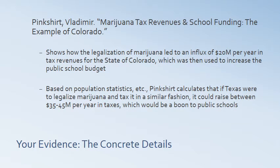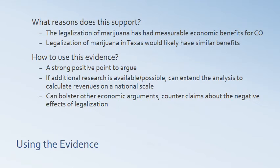Fictional source four is on marijuana tax revenues and school funding in Colorado. This person shows that the legalization of marijuana led to an influx of $20 million in tax revenues, which was then used to increase the public school budget. This person also calculates that if Texas were to legalize marijuana and tax it in a similar fashion, based on population, it could raise between $35 and $45 million per year in taxes, which could then be given to Texas public schools. You could use this to support the claim that the legalization of marijuana has had measurable economic benefits.